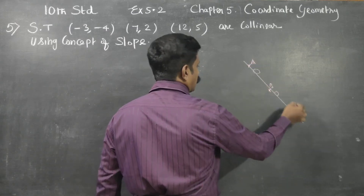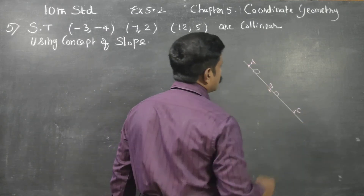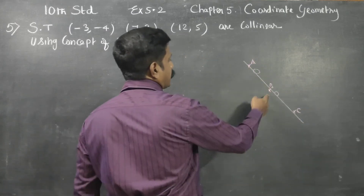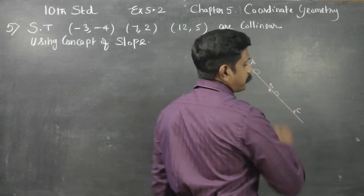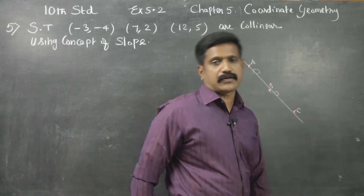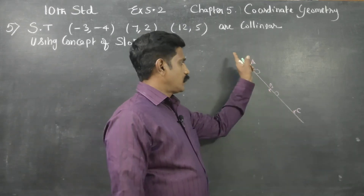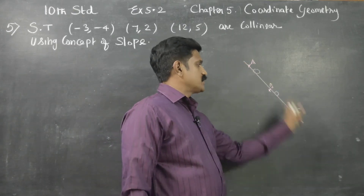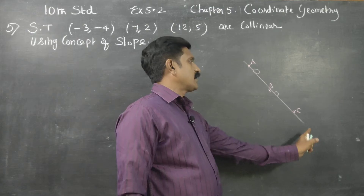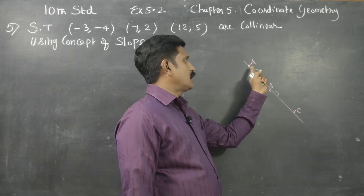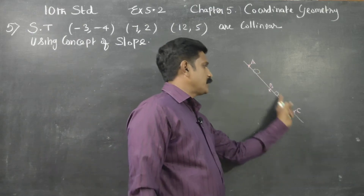If three points are collinear, the slope of AB and the slope of BC will be equal. Especially for 3 points, if you join them, the slopes must match.